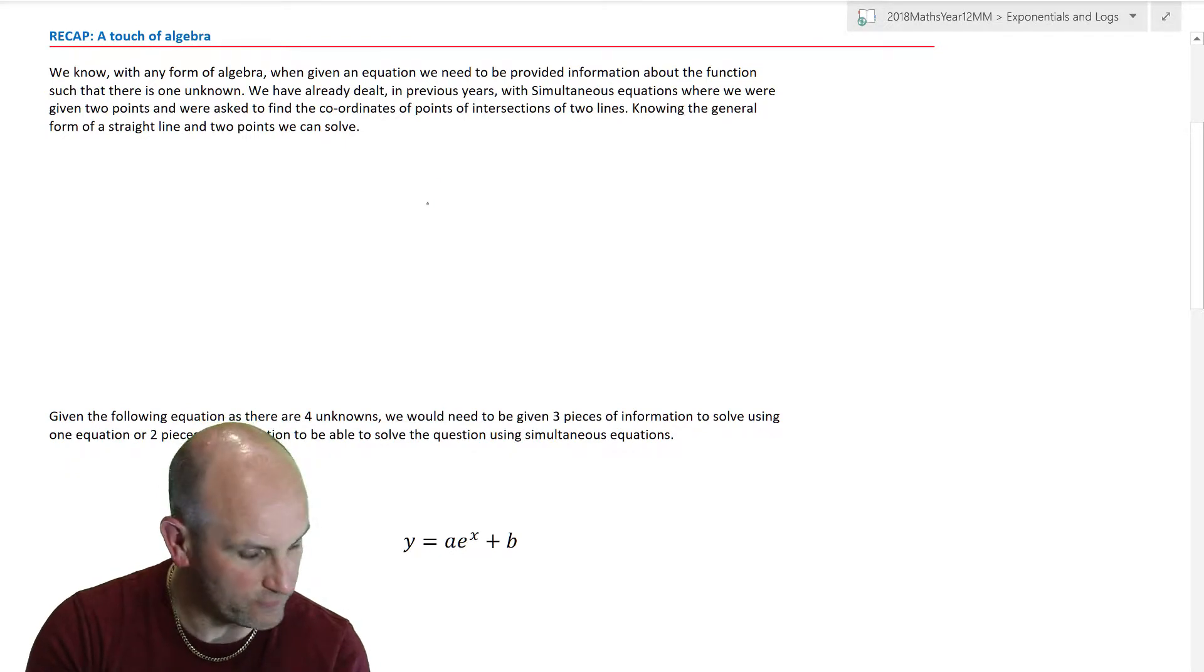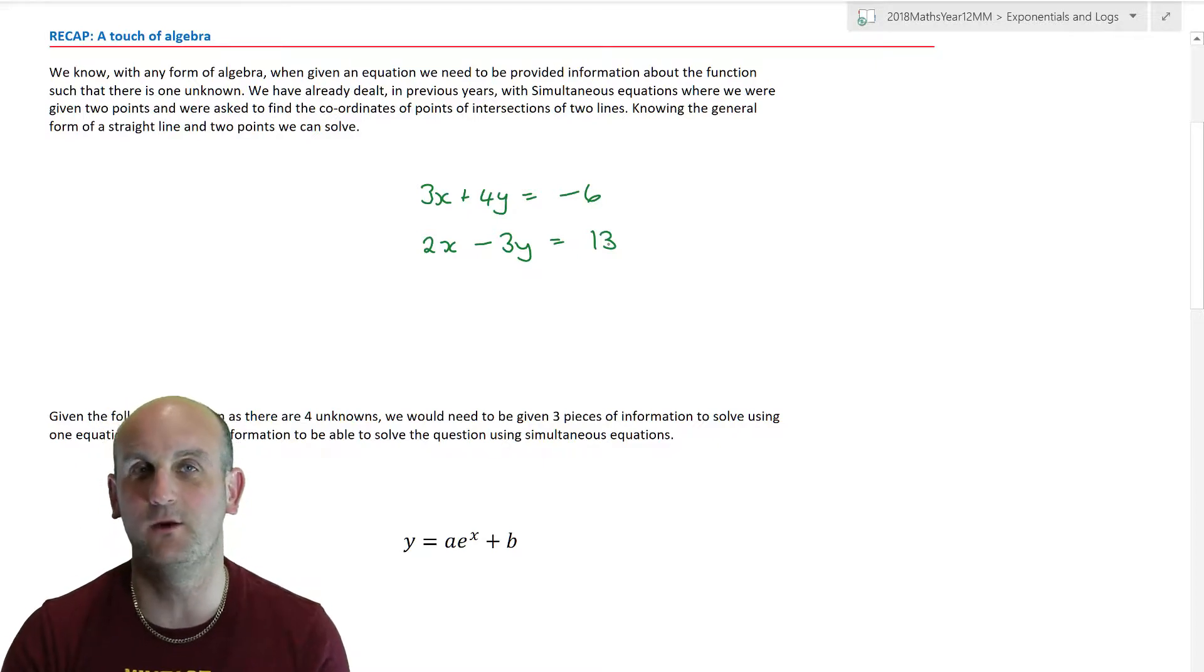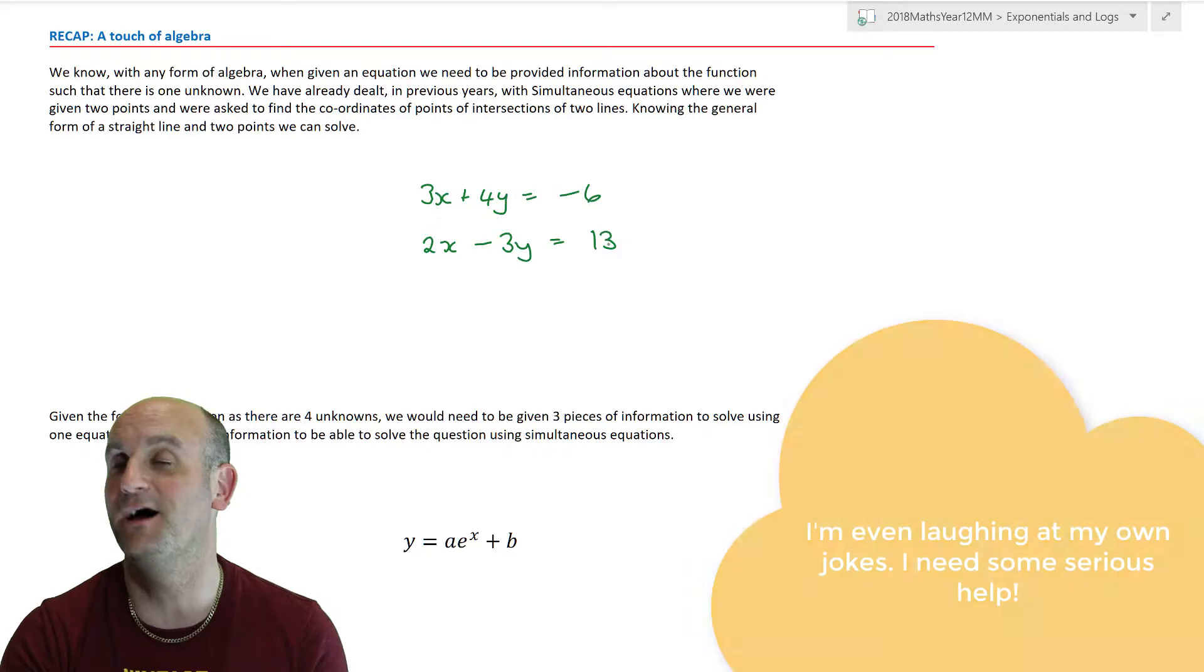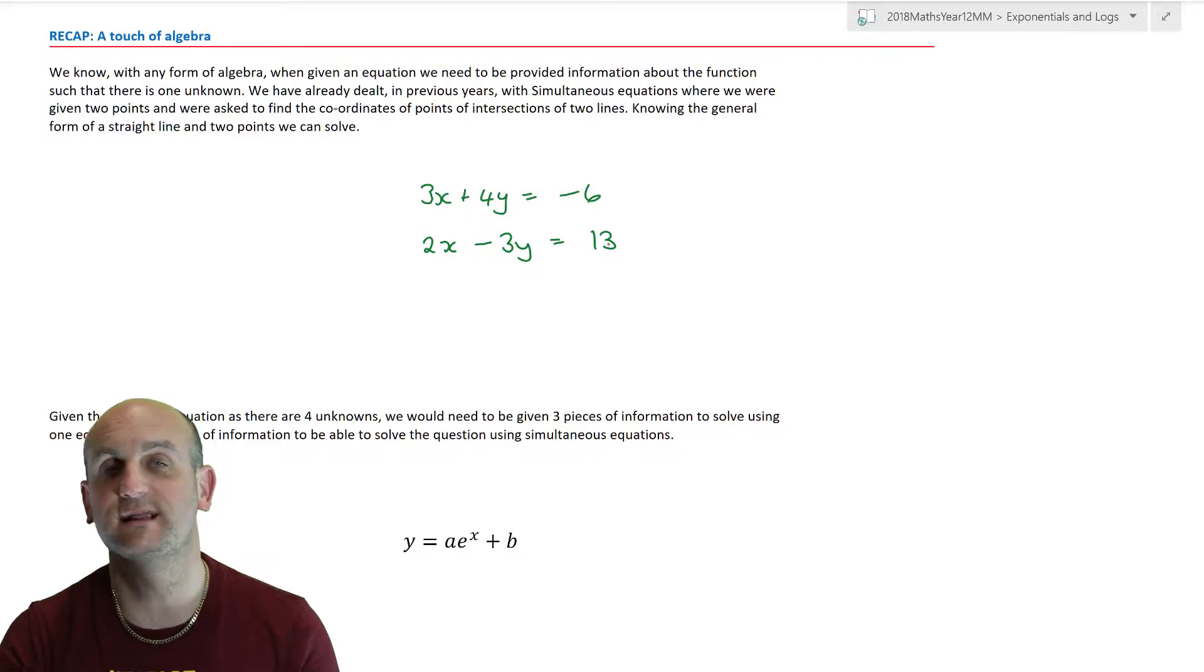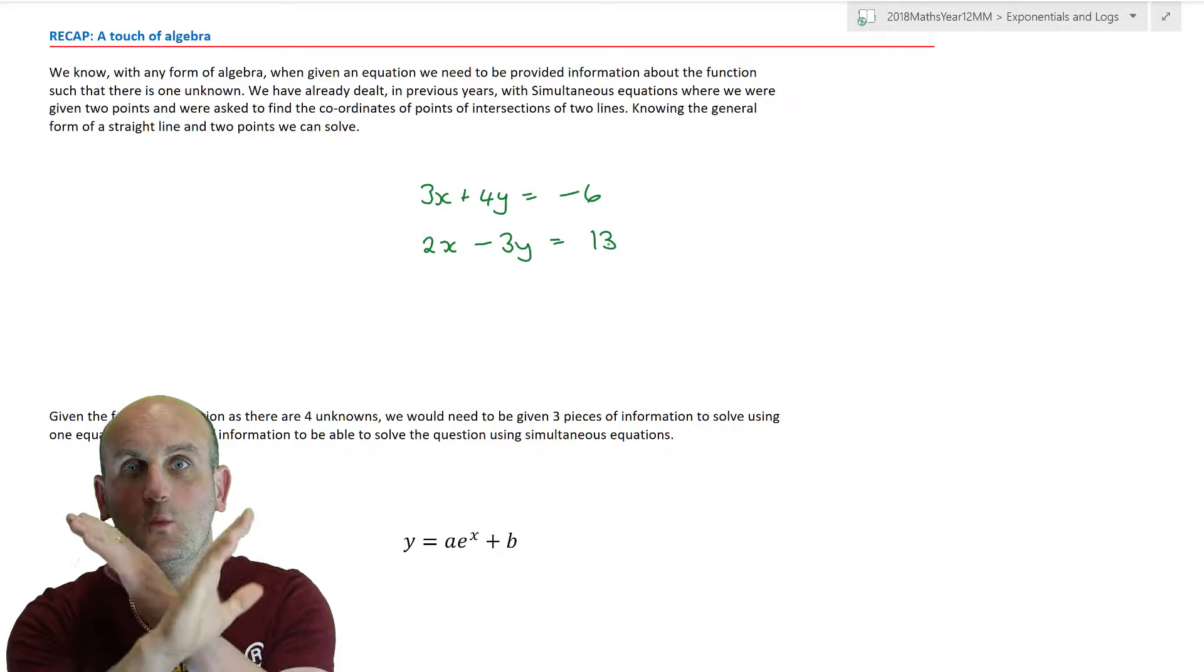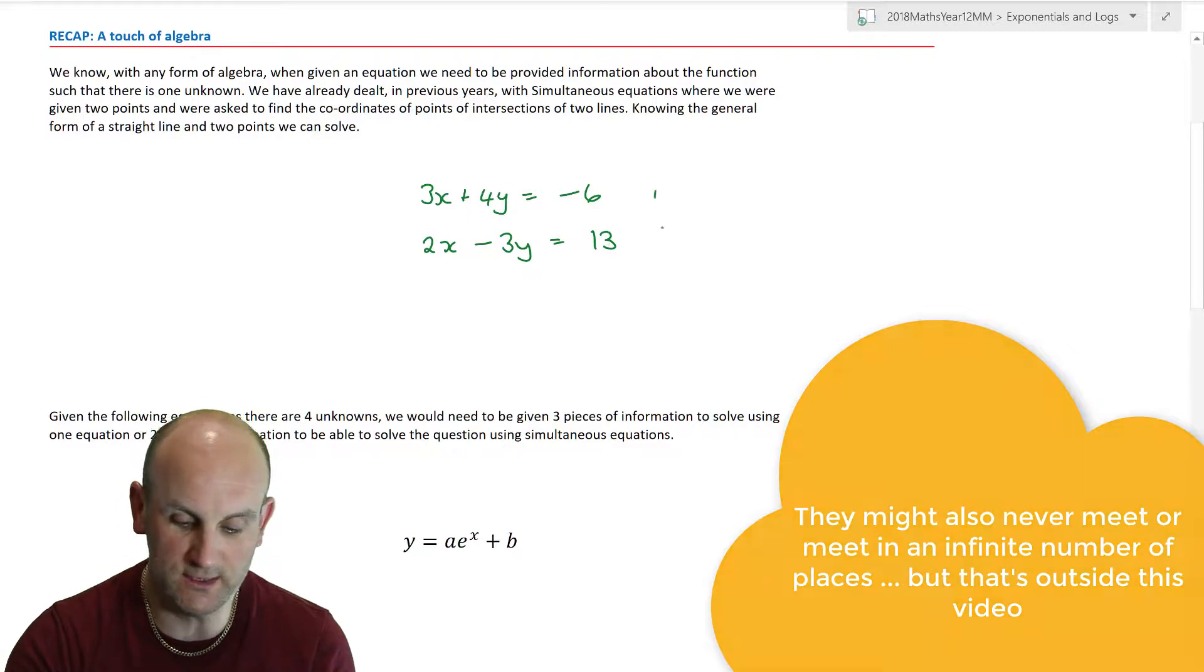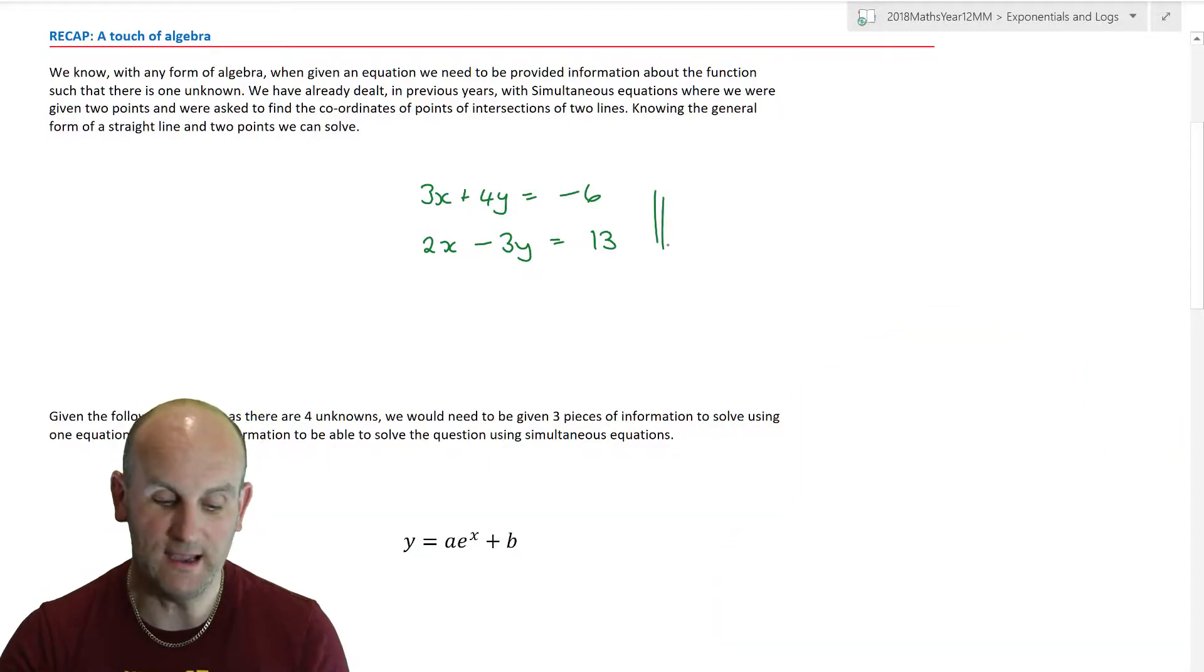I'm going to write down 3x plus 4y equals negative 6 and 2x minus 3y equals 13. And I'm going to say to you, what are they? And you're going to go, equations. And I'm going to go, why are you talking to me? I can't hear you. Yeah, I know, it's weird. I'm talking to you as if you're there. Anyway, they are indeed equations, but they're simultaneous equations. And what are simultaneous equations?